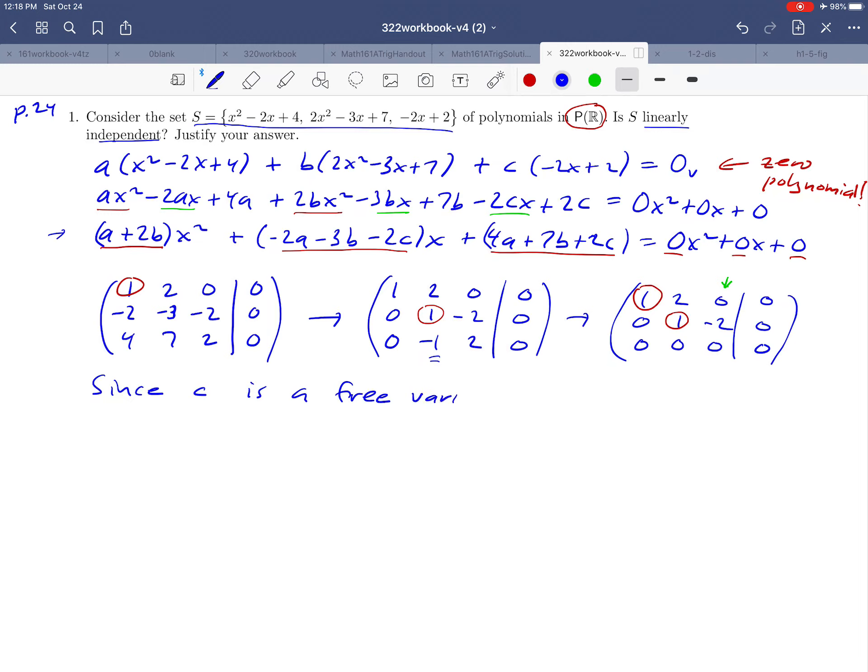So I'm going to write down in words what I just said there. Since c is a free variable, and it can be anything that we want it to be, including non-zero values. The above system must have non-trivial solutions. And having non-trivial solutions means that our vectors are linearly dependent.